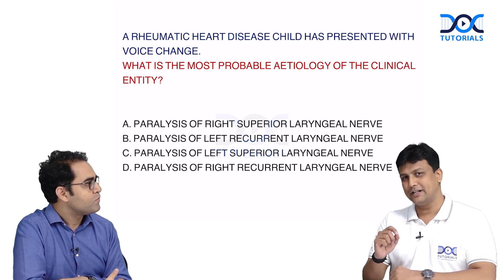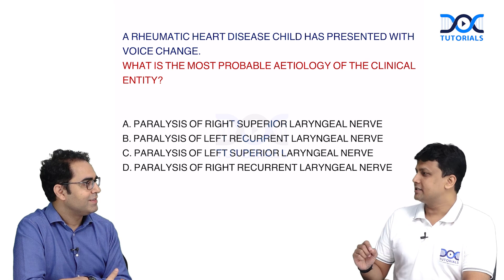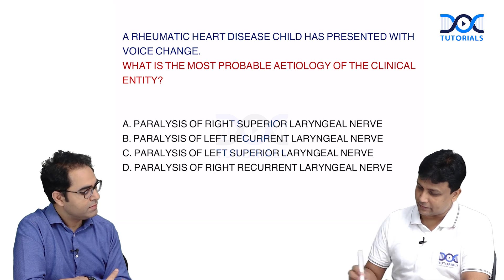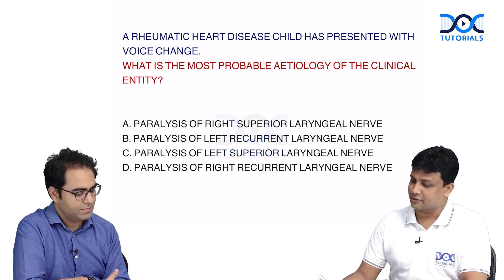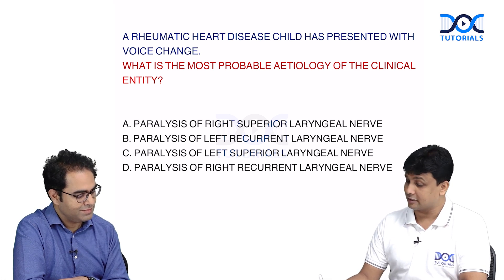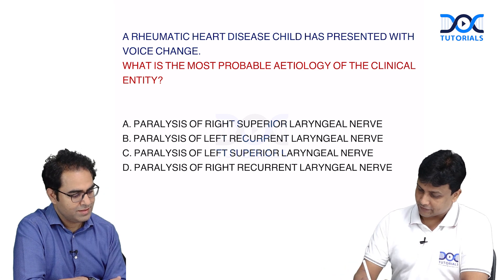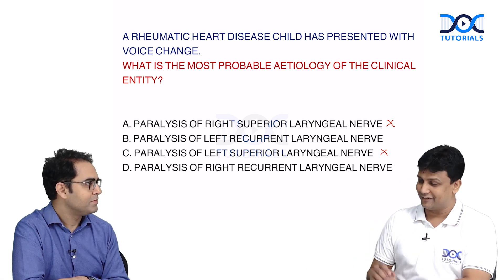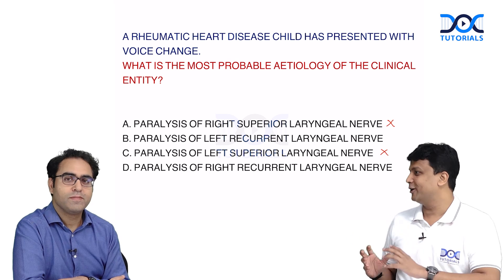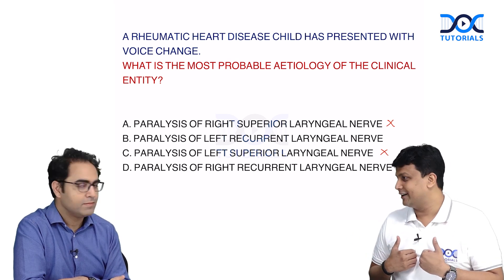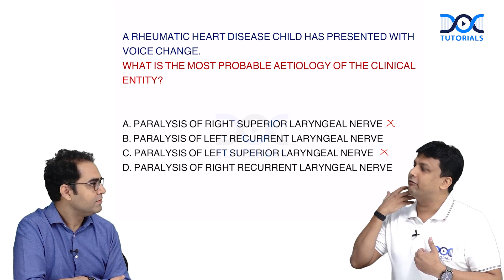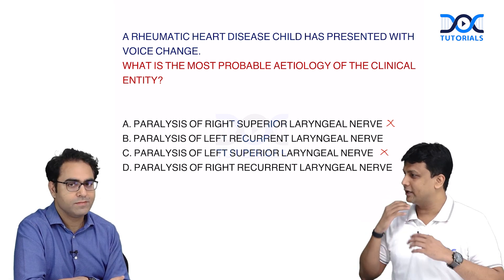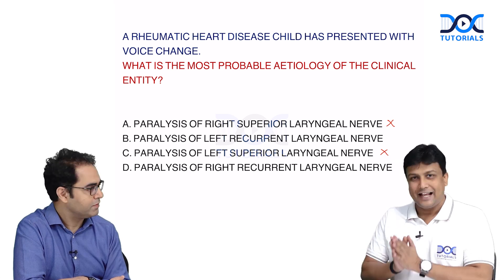Students can eliminate two options very easily. If you see the options — paralysis of right superior laryngeal nerve, left recurrent laryngeal nerve, left superior laryngeal nerve, and right — I will straightforwardly eliminate the superior laryngeal nerve from here. The superior laryngeal nerve divides into internal and external laryngeal nerve supplying the larynx; it is way above and has no relation with the heart. So I can eliminate two options.